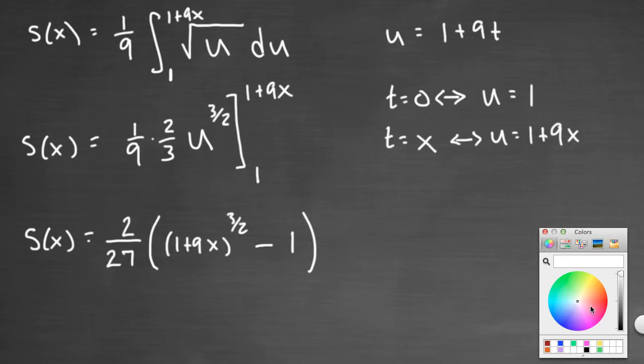So like I said, it doesn't really matter if you want to distribute the two over twenty-seven to each term, you can do that. I think I'll choose just to leave it factored here.